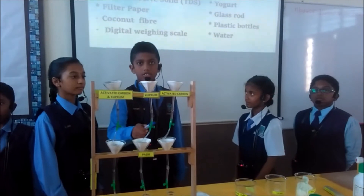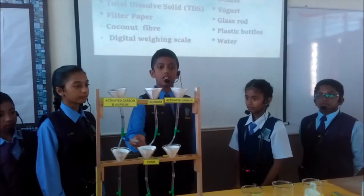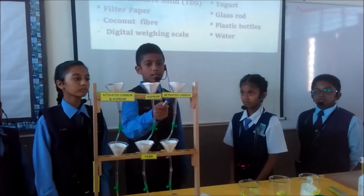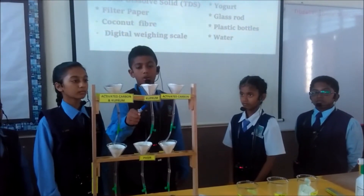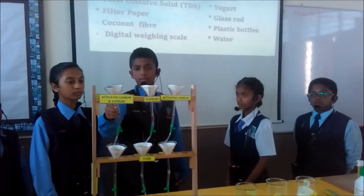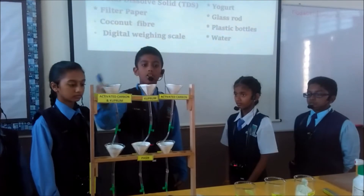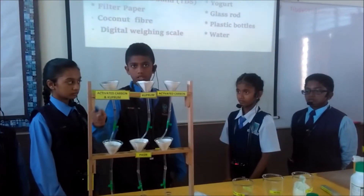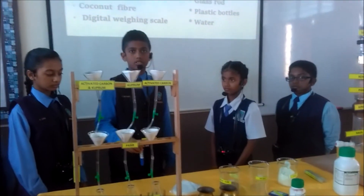These are the filters we are going to use for our experiment. For Filter A, we fill the funnel with activated carbon. For Filter B, we fill the funnel with copper. For Filter C, we fill the funnel with activated carbon and copper. All the funnels are filled with an equal amount of solution. Then, we let each solution stay for 10 minutes.